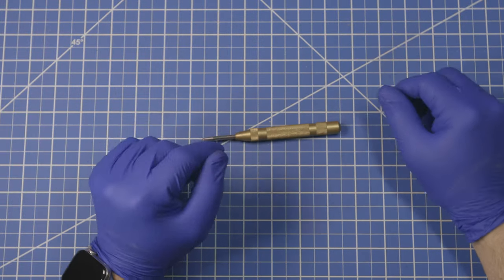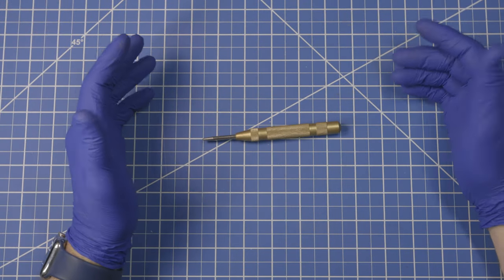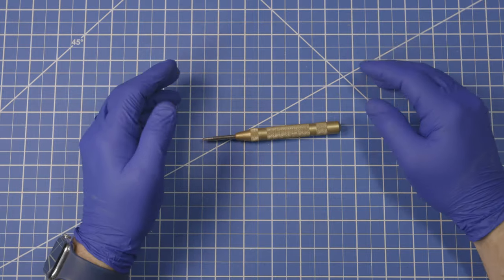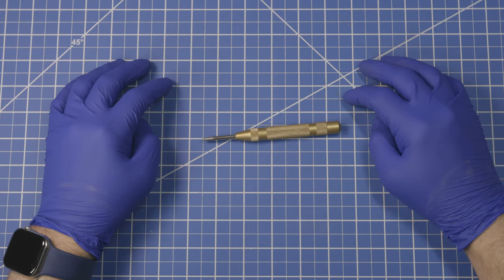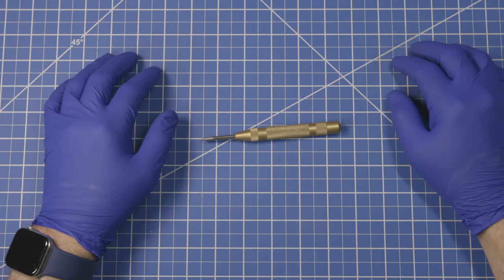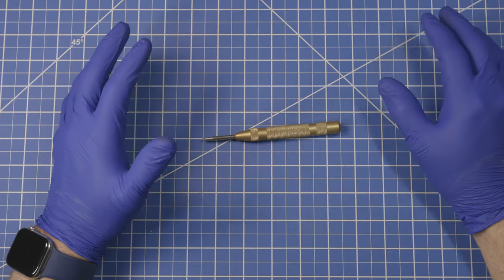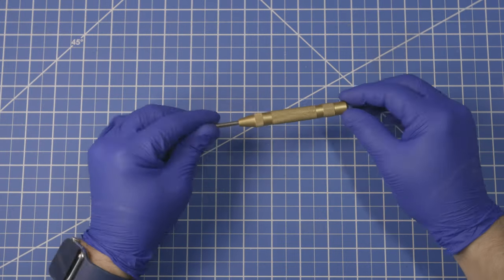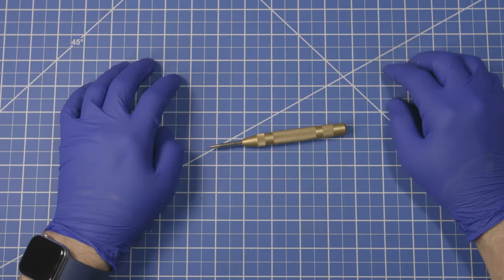So the name of that design, if you're interested, is called the Sweet Patent. Mr. Sweet figured it out in 1942, and it's been basically the same mechanism ever since. There's been a few variants since then, but this is pretty much a Sweet Patent-style automatic center punch.